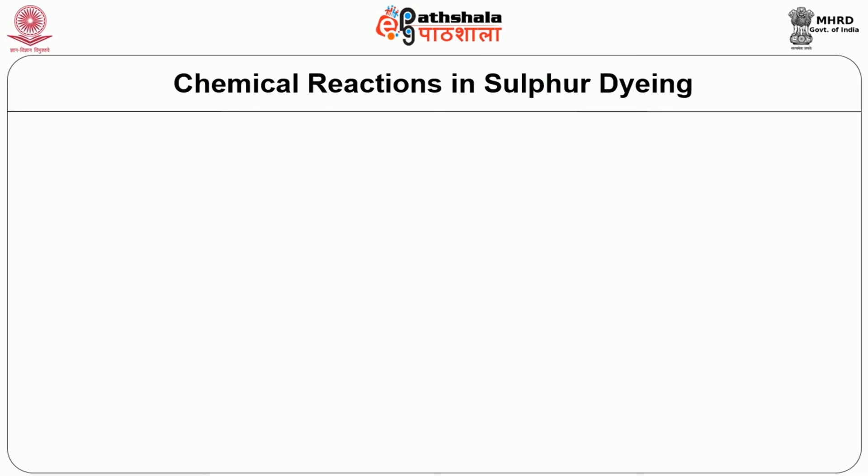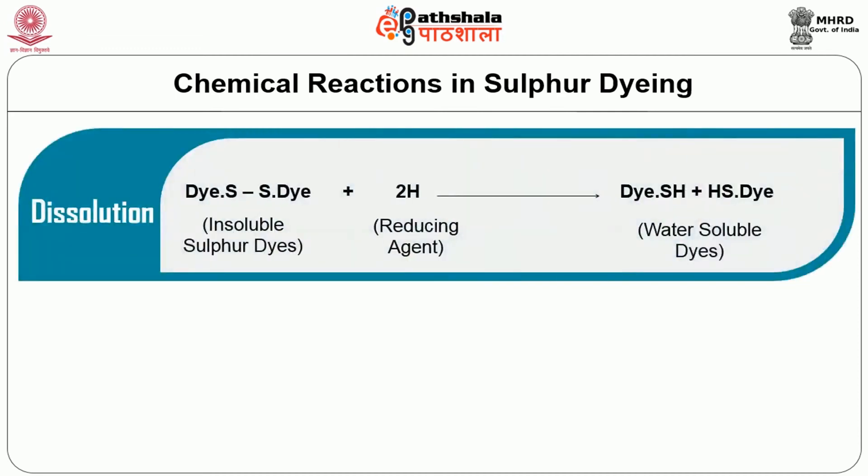The chemical reactions in sulphur dyeing: the first step is dissolution — the insoluble dye is converted to soluble leuco form by addition of a reducing agent and dyeing is carried out. The thiols containing SH groups are readily oxidised in the fibre to the original insoluble sulphur dye after dyeing, giving a colour with very good fastness properties. Thus, the water-soluble form of dye is converted to water-insoluble form by the action of oxidising agents.